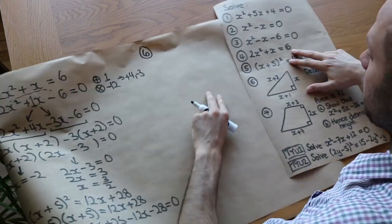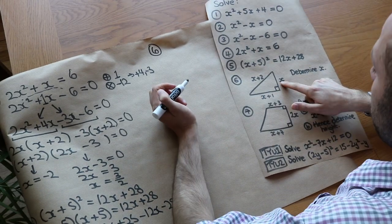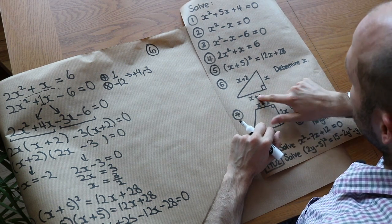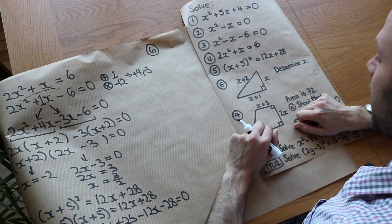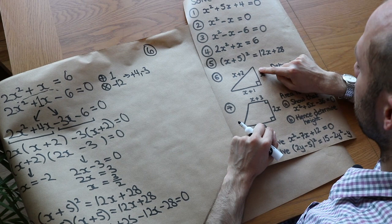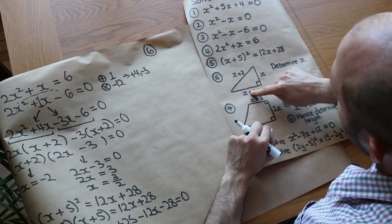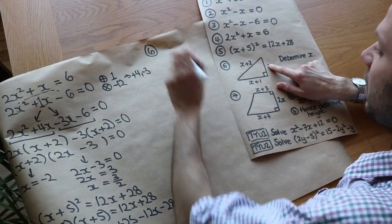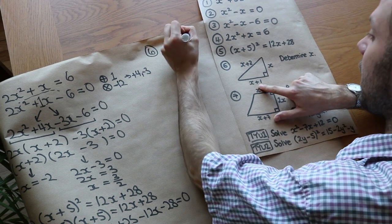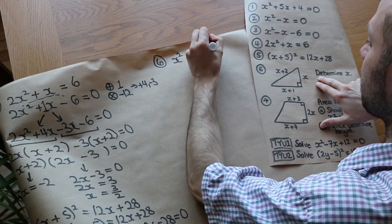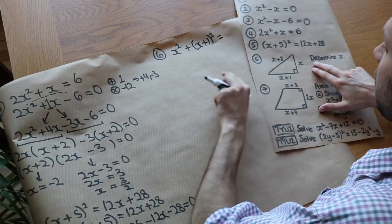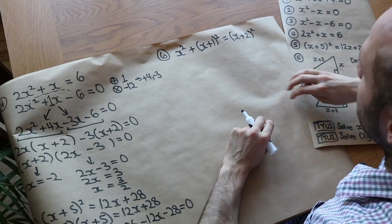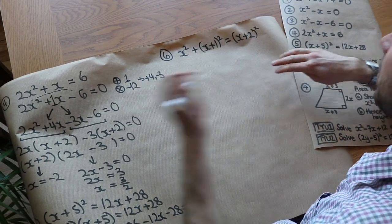Now we have some applied examples. We've got a right-angle triangle with sides labelled and we need to determine x. What relates to three sides of a right-angle triangle? Pythagoras' theorem: one shorter side squared plus the other shorter side squared equals the hypotenuse squared. From the diagram: x squared plus x plus one all squared equals x plus two squared. We've got a quadratic equation to solve — when we expand, we'll have x squared terms.